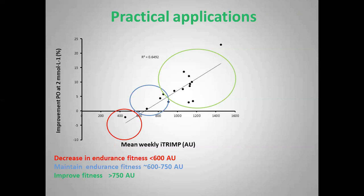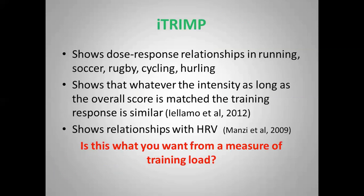So how can we work practically with this information? On a group level, we could identify what load level would potentially decrease fitness, what could be used for maintenance of fitness, and what could be used for improvement in fitness. Obviously there's variation there, but this is the first part of the process. Over the longer term, we'd refine it for each individual by assessing whether the prescribed load actually did improve performance or not, and whether we need to change it to get the desired response.